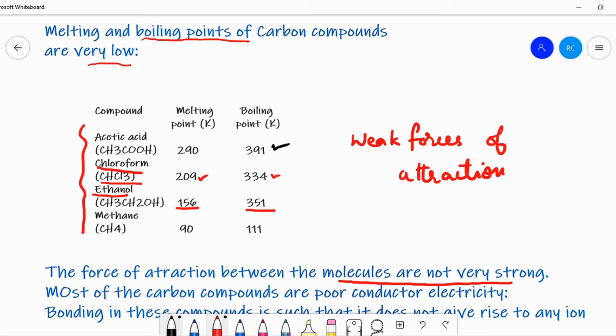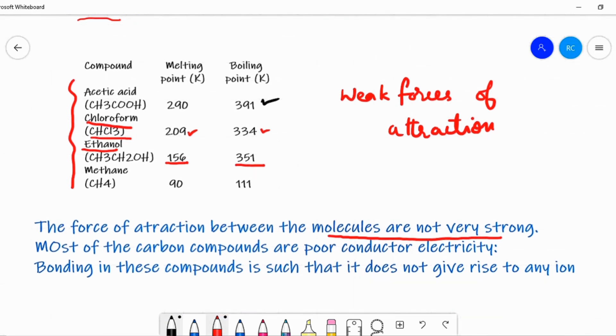And again, another property of carbon compounds is that most of the carbon compounds are poor conductors of electricity. You already know to conduct electricity in a solid compound, it requires free electrons. But in the case of liquids like acetic acid, ethanol, etc., they need ions. Positive and negative ions make the passage of electricity. In these compounds actually, they do not give any ions.